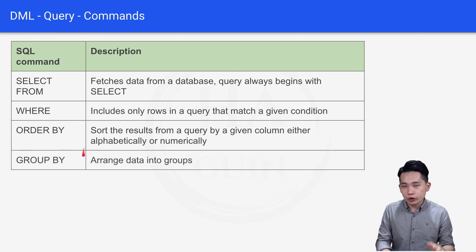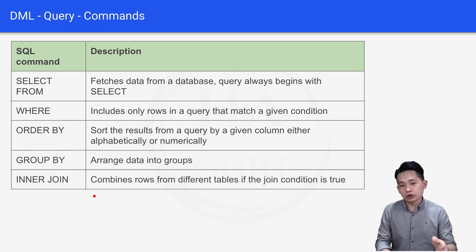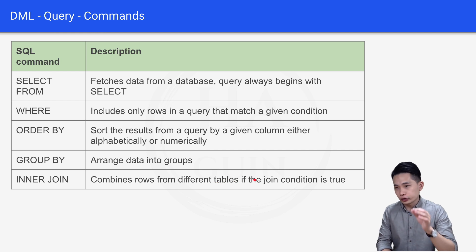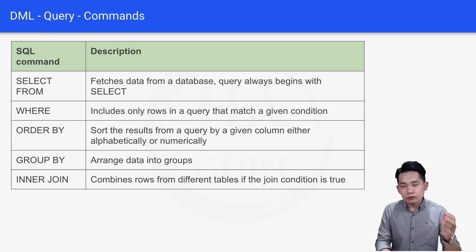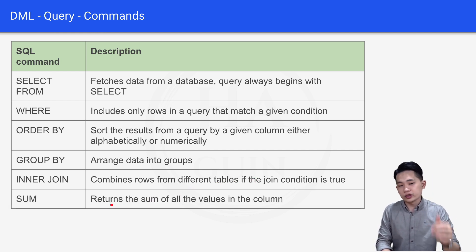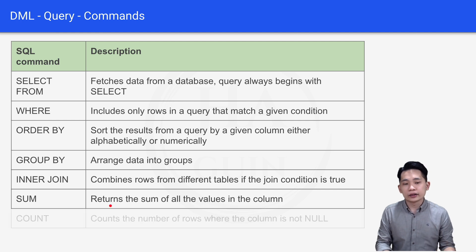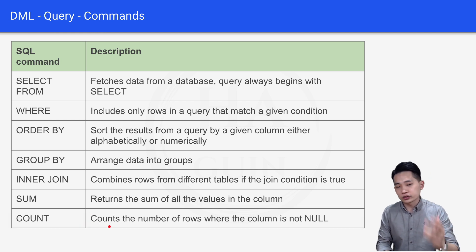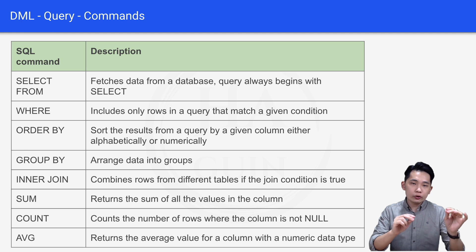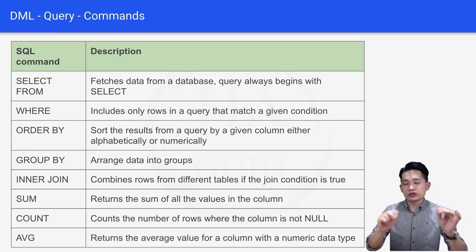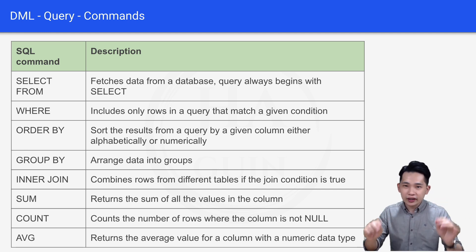Next is GROUP BY, which arranges data into groups. And then INNER JOIN, which combines rows from different tables if the join condition is true. Furthermore, we have SUM, which returns the sum of all the values in a column. And then COUNT, which counts the number of rows where the column is not null. And finally we have AVG, which returns the average value for a column with a numeric data type.